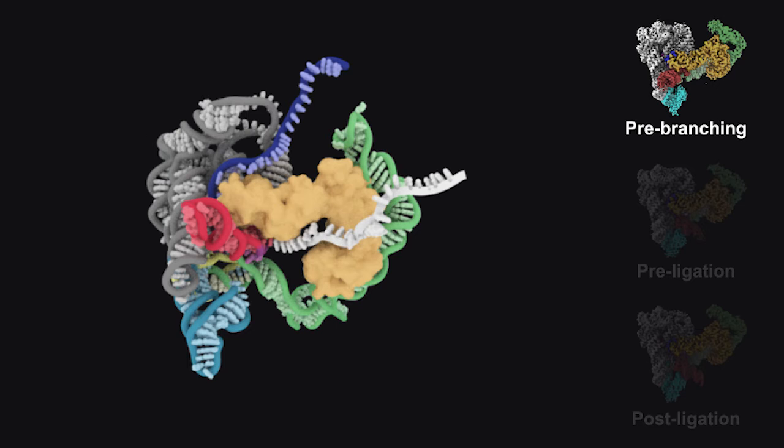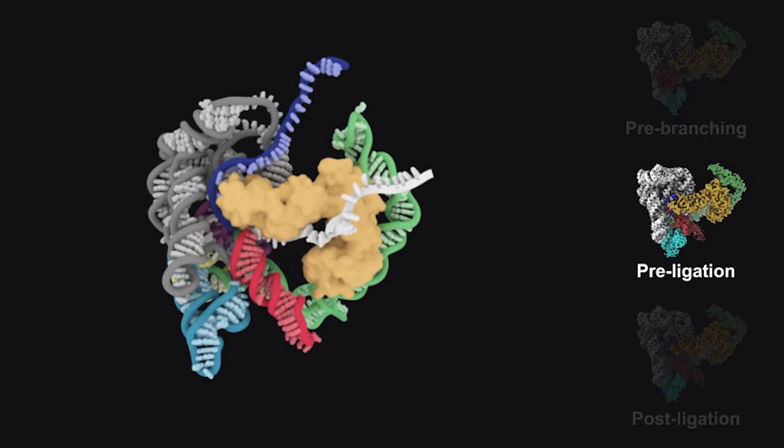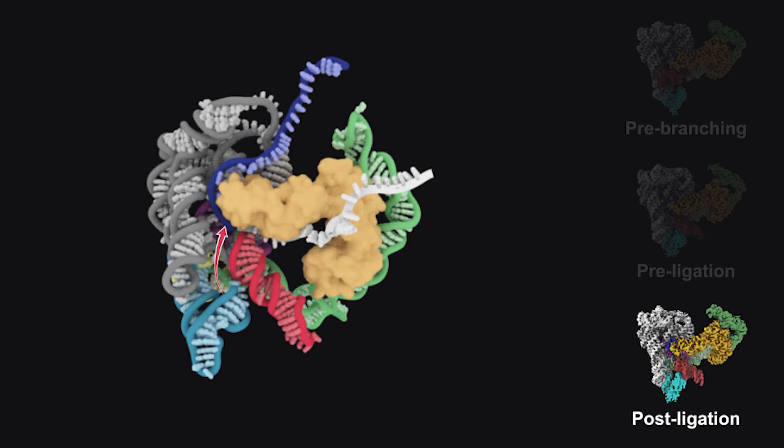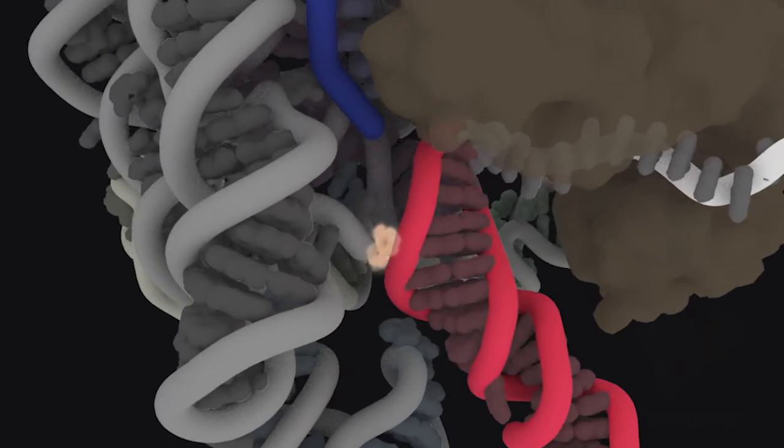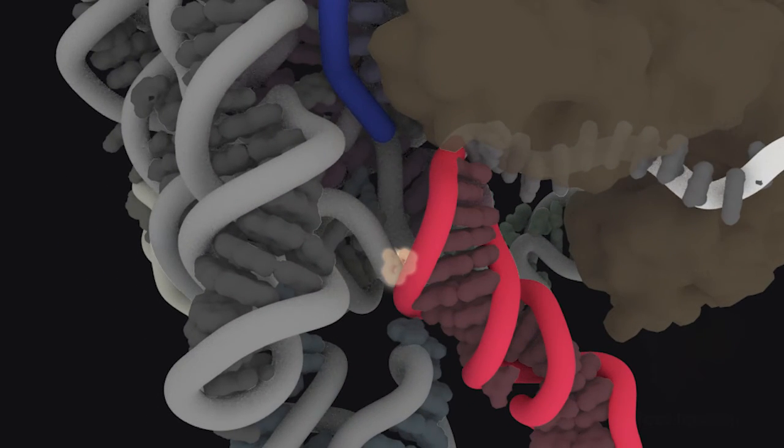These structures altogether provide a holistic view of the biochemical mechanism of intron branching. In addition, we have visualized the branch point adenosine in action, revealing its active role in finely tuning the branching pathway through conformational changes.